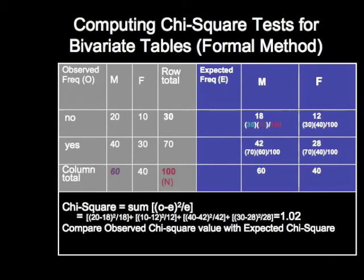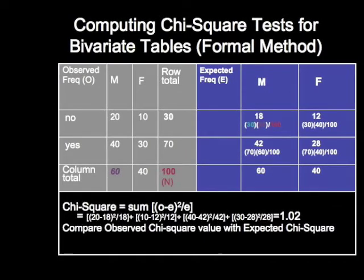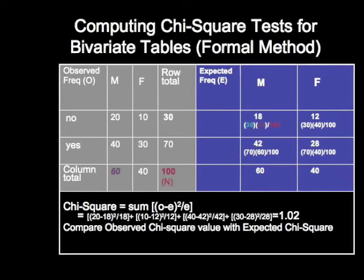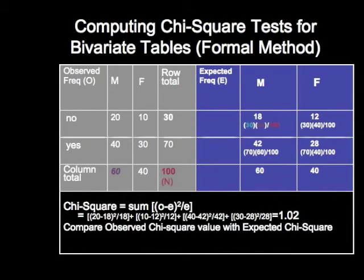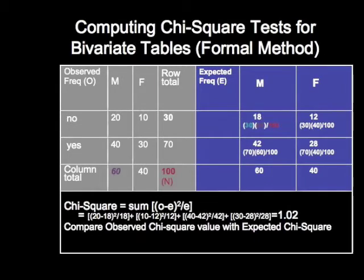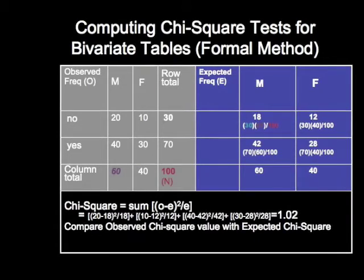For instance, if the variables gender and this dependent variable are unrelated, we would expect there would be 18 men with a no score. That 18 is found by taking the marginal total of 30 for no, times the marginal total for men, which is 60, divided by the total number, which in this case is 100. That's the expected cell frequency.